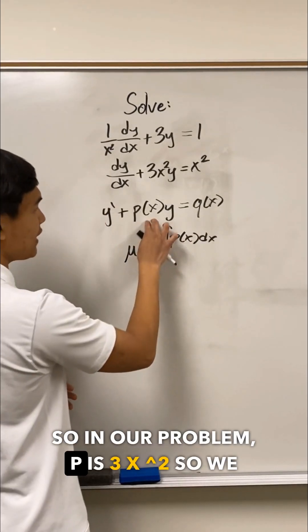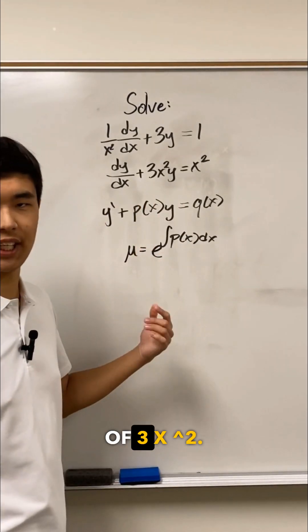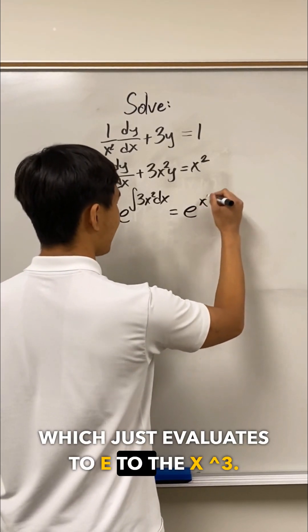So in our problem, p is 3x squared, so we need to find e to the integral of 3x squared, which just evaluates to e to the x cubed.